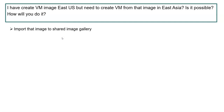The next question: I have created a VM image in East US, but need to create a VM from that image in East Asia — is it possible? How will you do it? This is related to the previous question, where you captured an image from a VM and replicated it as multiple instances. Now the question is: you have created the image in a particular region — East US — and the interviewer wants to use it in East Asia. That is possible. There is an option called Shared Image Library. You need to first capture the image from the VM by following the previous steps, then import that image to the Shared Image Library.